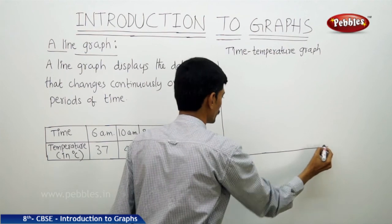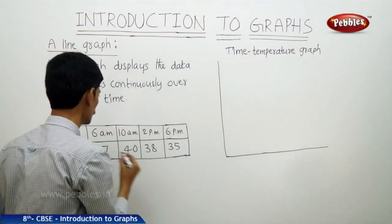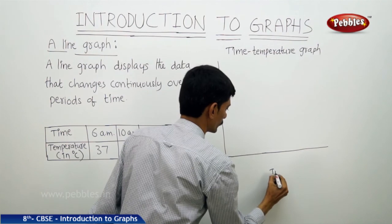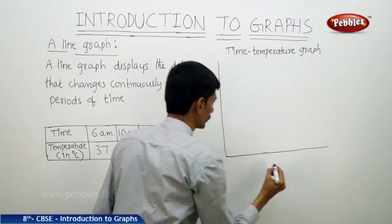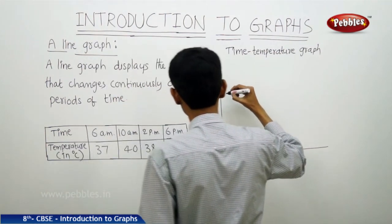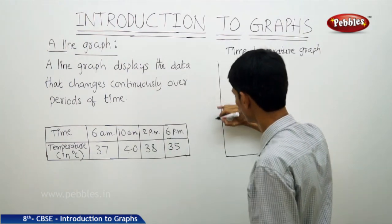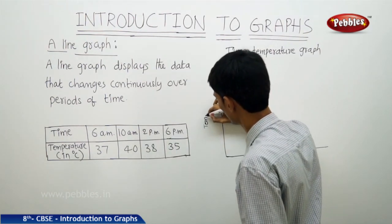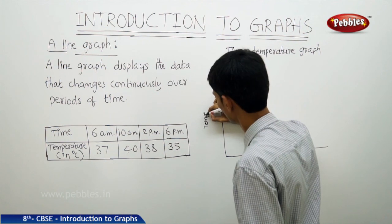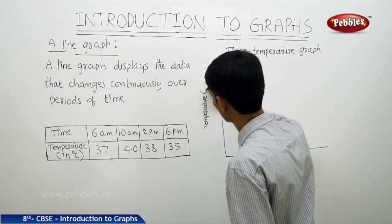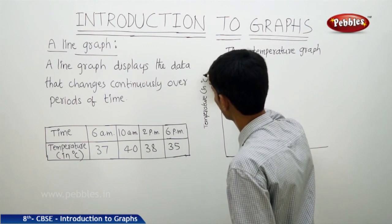On the horizontal line we will take the time, and on the vertical line we will take the temperature in degrees. We will take the degrees in degrees centigrade.